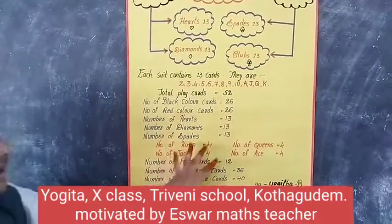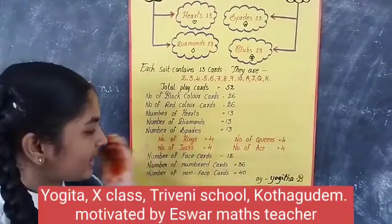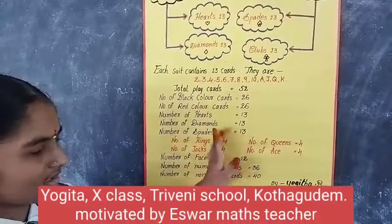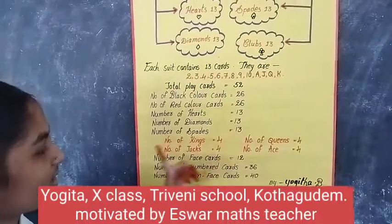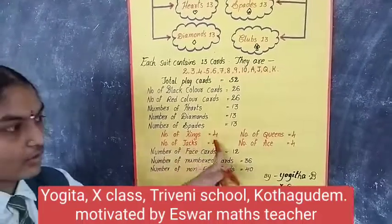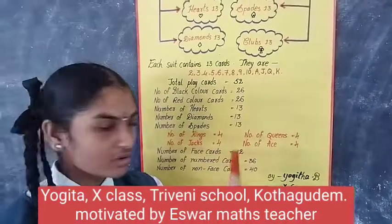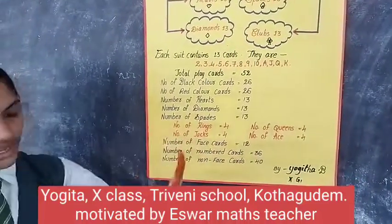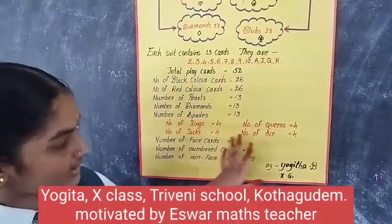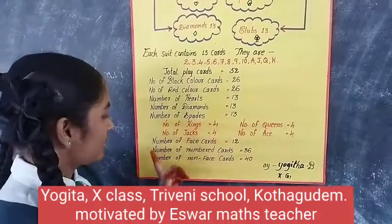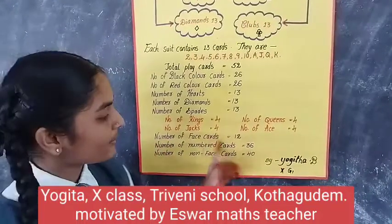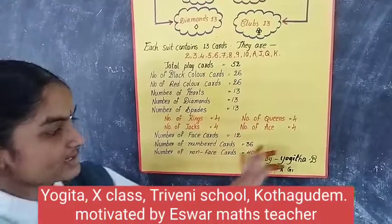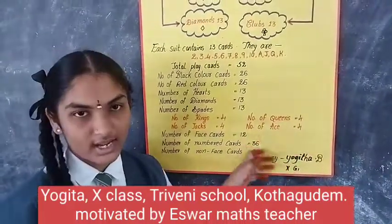Coming to the number of kings — kings is denoted with K, that is 4. Number of jacks, J, is 4. Number of queens, Q, is 4. Number of aces, A, is 4. Now, number of face cards — I showed you that face cards — that will be totally 12. Now, number of numbered cards, that total will be 36. Number of non-face cards, that will be totally 40 cards.